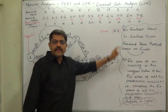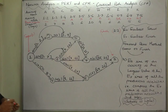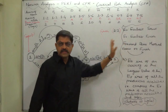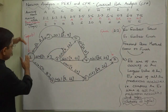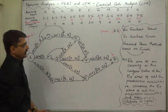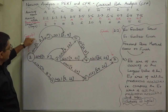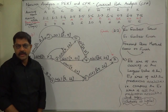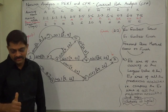So we follow the forward pass method — this method is popularly known as forward pass. From start to finish we go forward, and we determine the earliest start time and earliest finish time of each activity. I hope you are able to understand everything. Thank you very much.